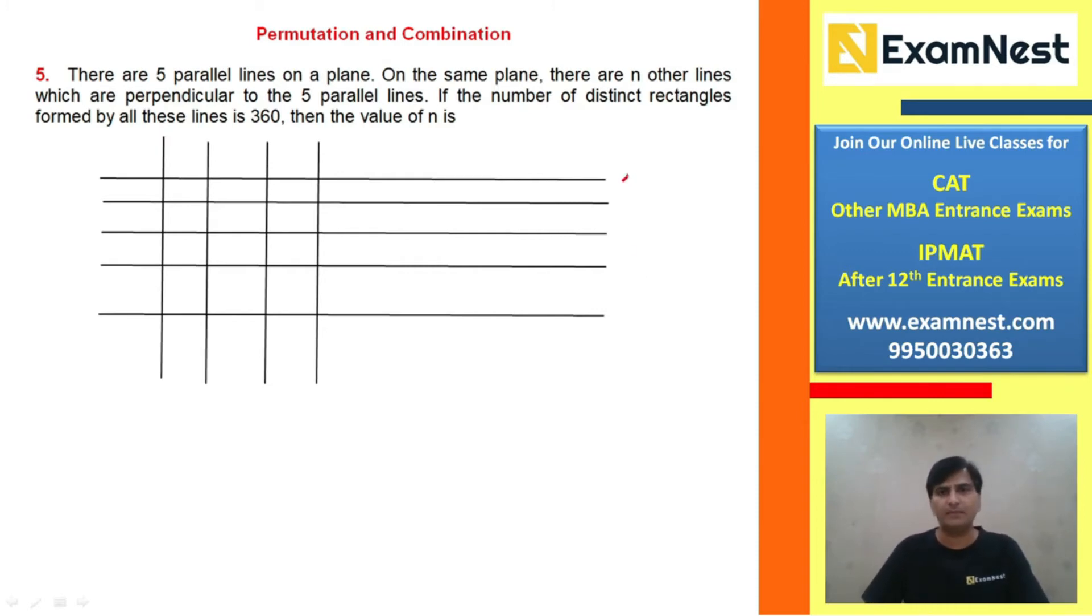We have five parallel lines. From these, we choose two parallel lines. Let's say there are total n lines in the perpendicular direction. So, 5C2 times nC2 gives us the number of rectangles. This value we're given is 360.